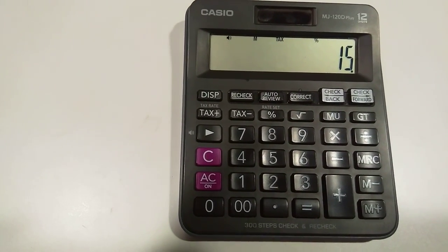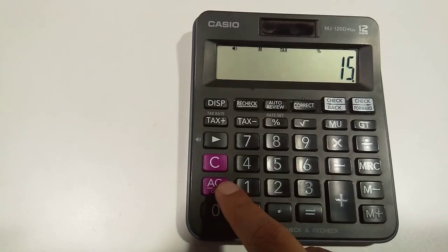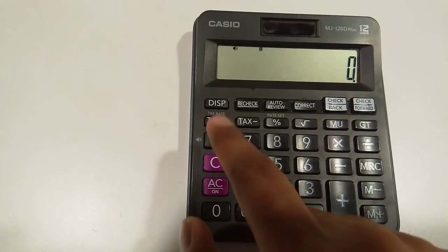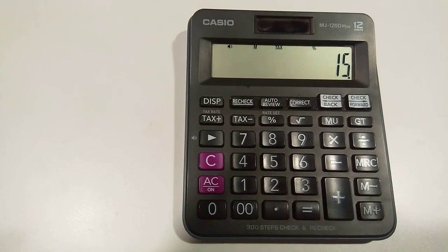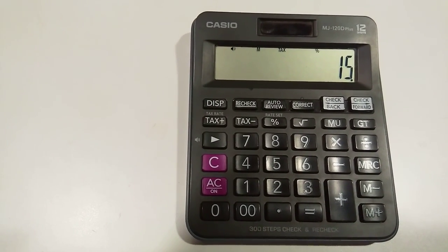So now this is the value stored in my calculator as a tax rate. To find out, I go back, I press the tax rate button. You see here, so 15% is the tax rate stored in my calculator.